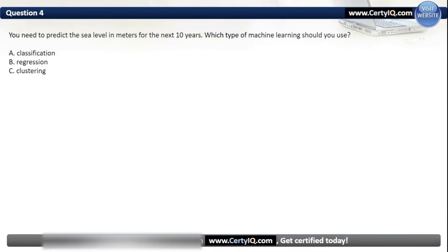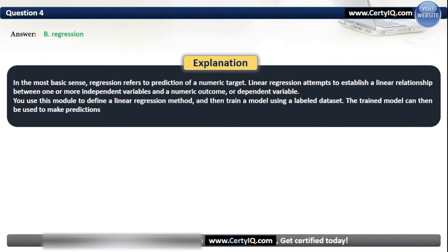Question 4. You need to predict the sea level in meters for the next 10 years. Which type of machine learning should you use? Options: A. Classification, B. Regression, C. Clustering. The correct answer is B. Regression. In the most basic sense, regression refers to prediction of a numeric target. Linear regression attempts to establish a linear relationship between one or more independent variables and a numeric outcome. You can use this to define a linear regression method, train a model using a labeled dataset, and then use the trained model to make predictions.